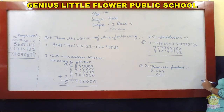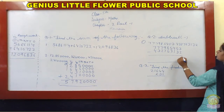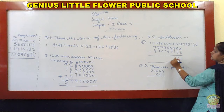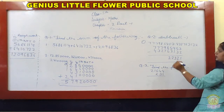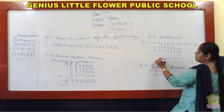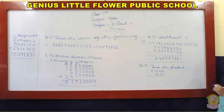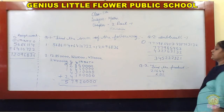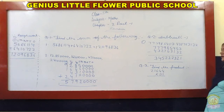Sab se pahle step one, hum ones ko minus karenge. Three minus two: one. Five minus three: two. Four minus one: three. Five minus three: two. Eight minus six: two. Nine minus seven: two. Seven minus two: five. Seven minus three: four. Seven minus four: three. Answer: 34 crore, 52,22,321.